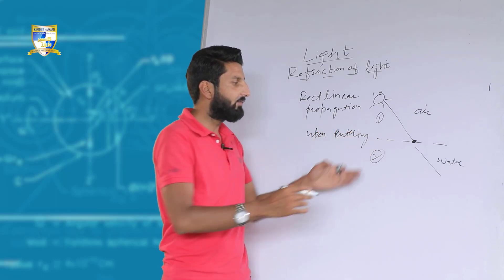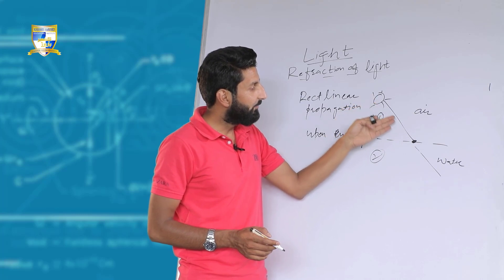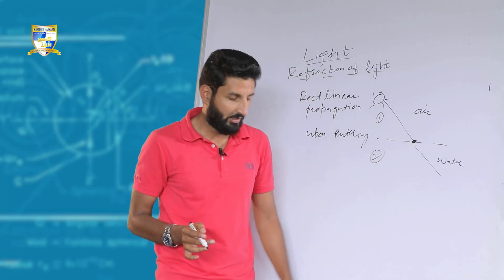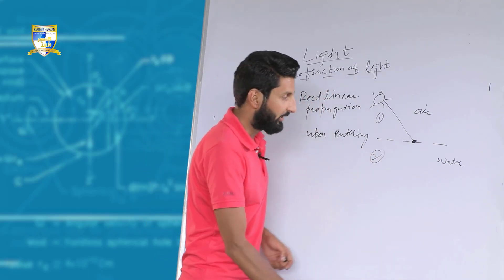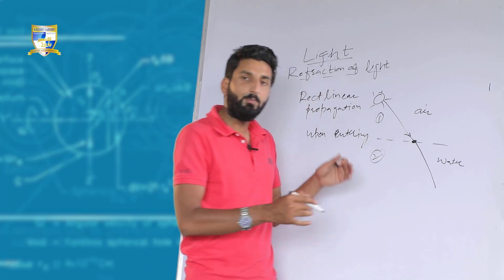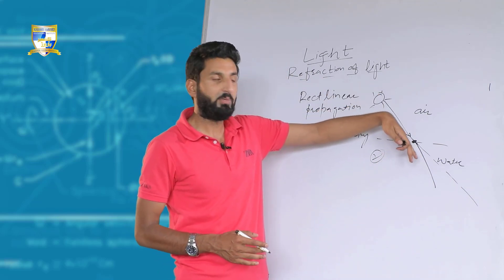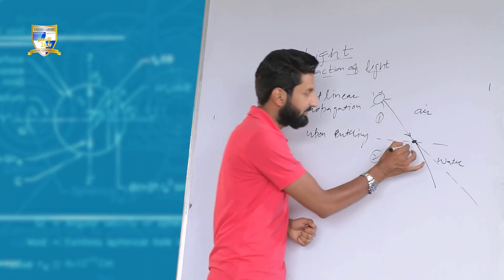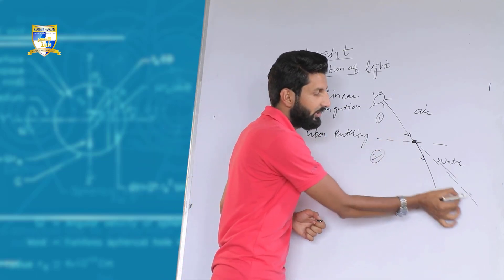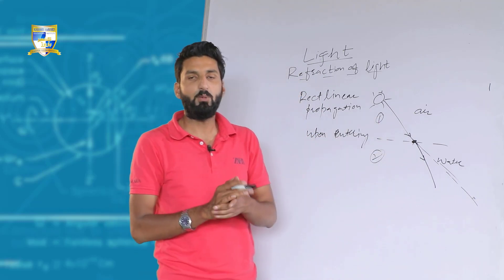Once light travels from one medium to another, upon entering the other medium — when the light came from air and entered into the water — the moment light entered the water, it would slightly change its path. It appears that this ray of light was supposed to follow a straight path, but it has slightly bent. It has changed its direction of propagation.